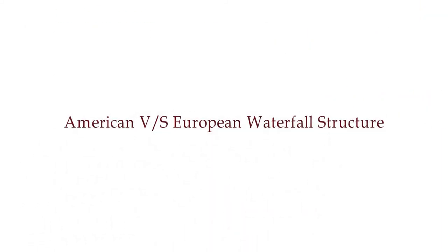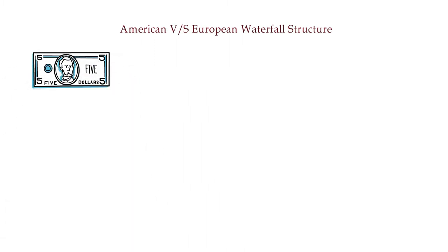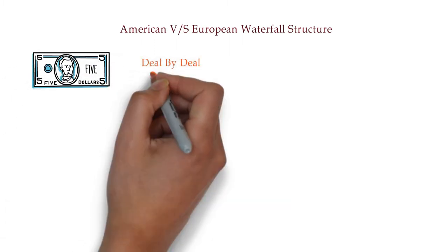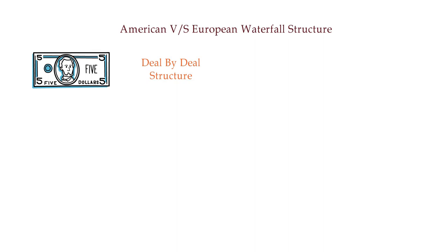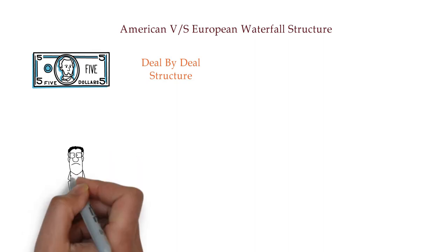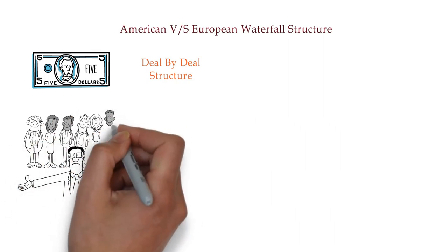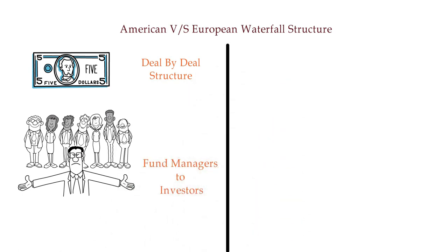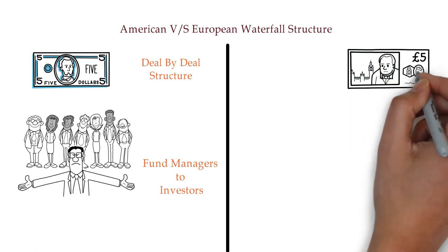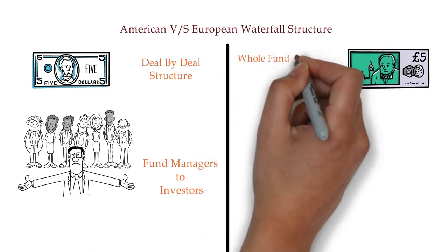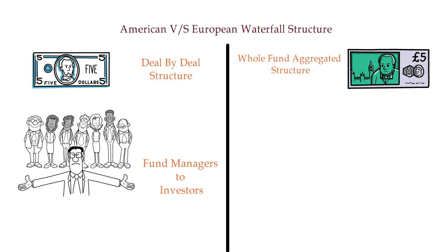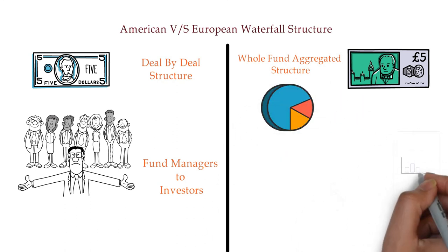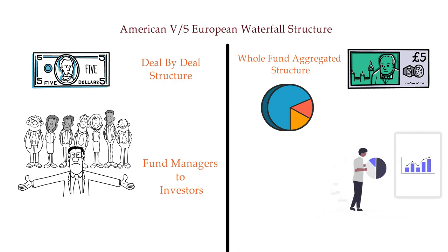Now let's understand the difference between the American and European waterfall structures. The American waterfall supports a deal-by-deal return schedule, allowing managers to get paid before investors receive all of their invested capital and preferred return. In the European waterfall, the allocation of distribution proceeds is determined at a whole-fund level, and each distribution reflects aggregate performance rather than being tied to an individual investment.